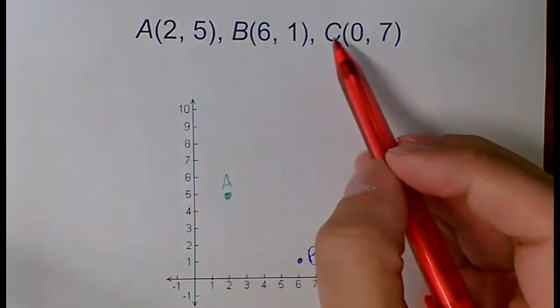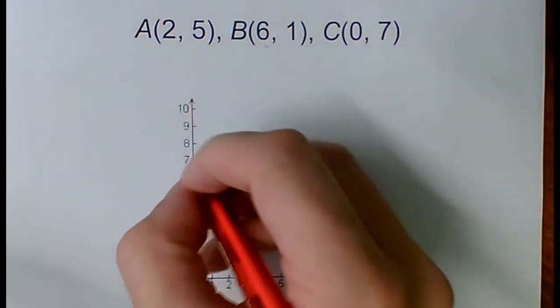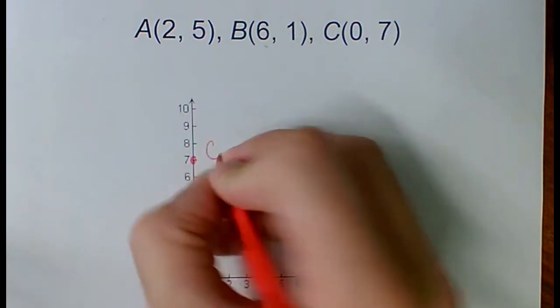And C is zero, seven. So zero means I don't move, but the seven Y value means I go up one, two, three, four, five, six, seven. And that's my C.